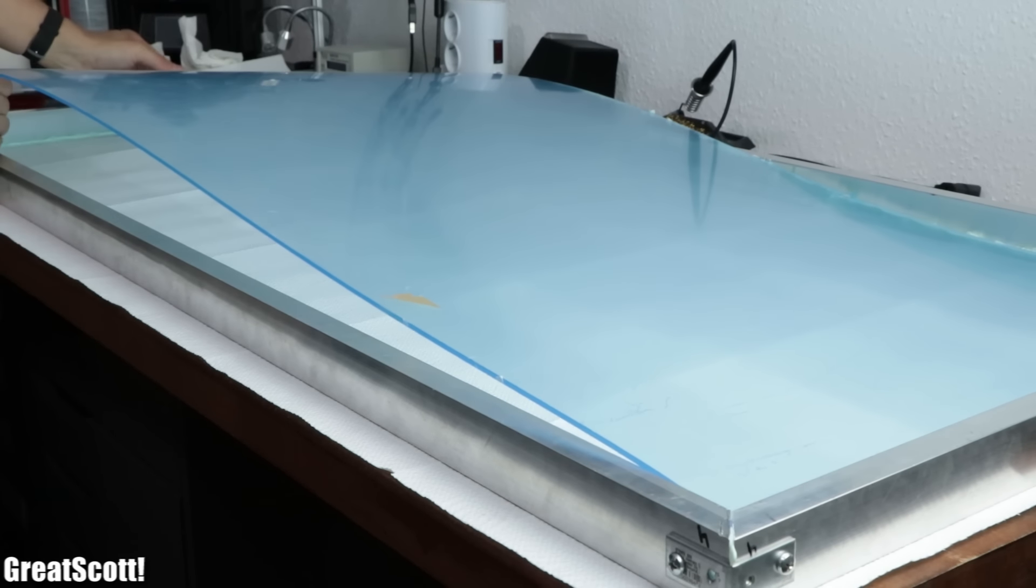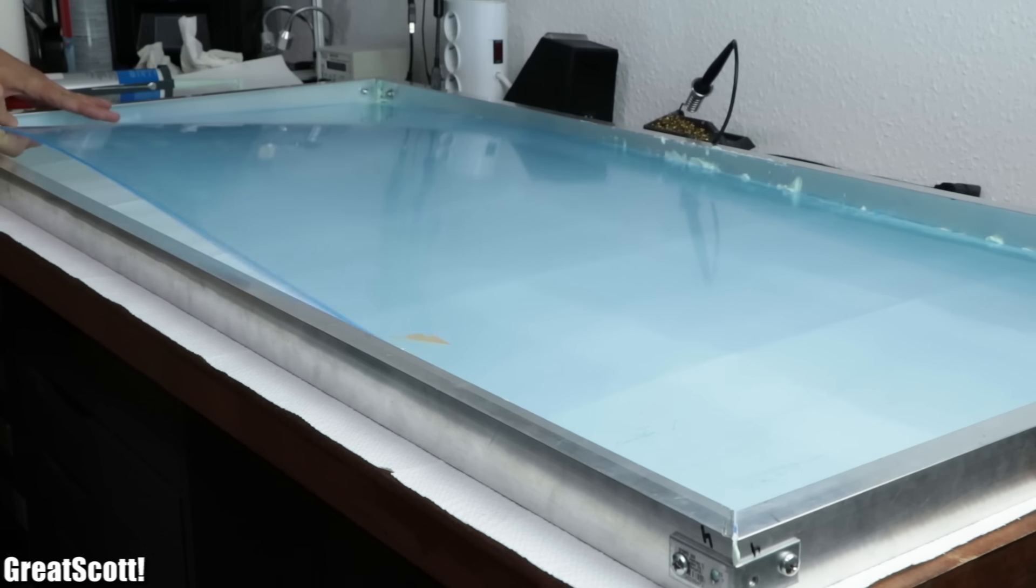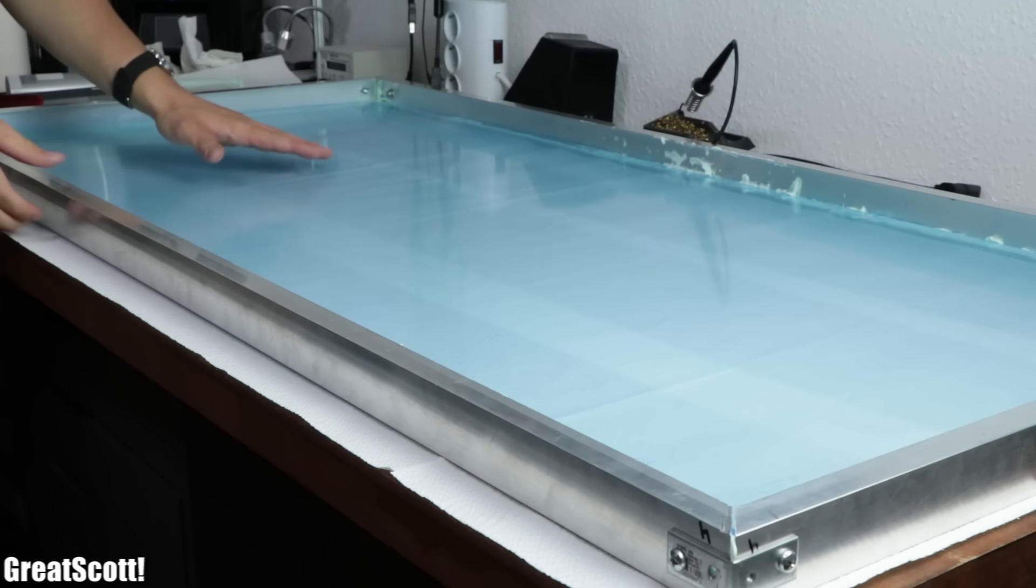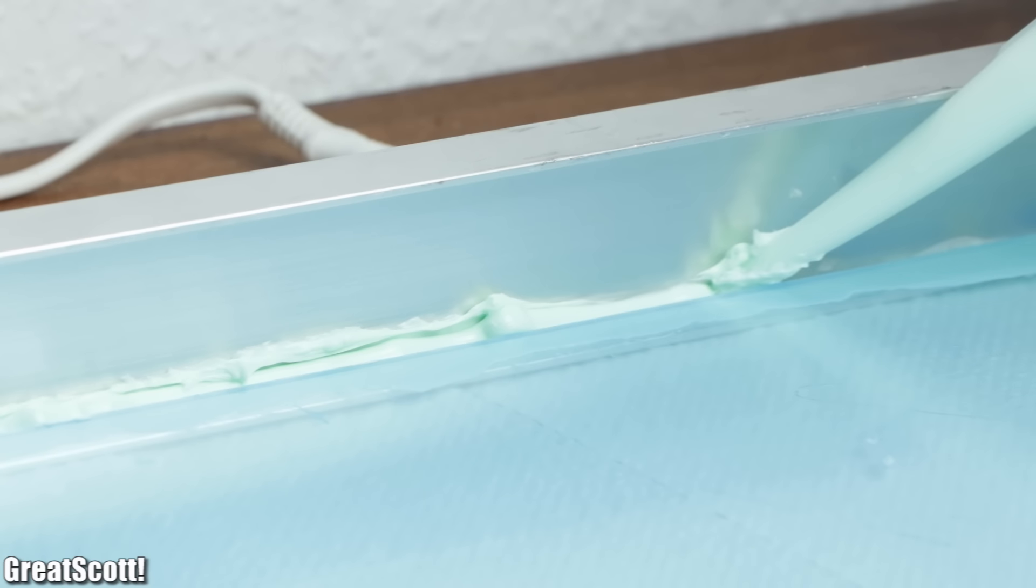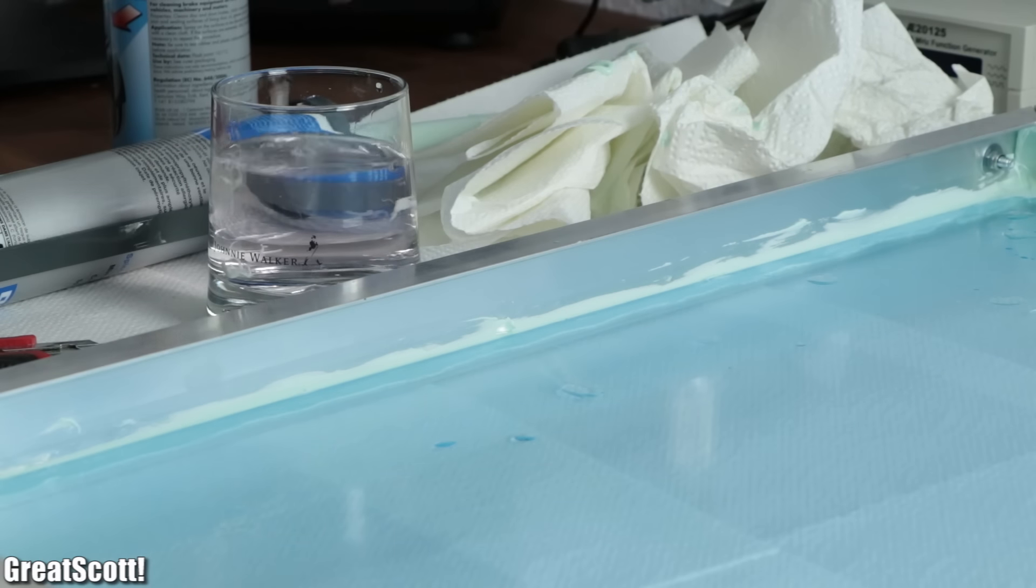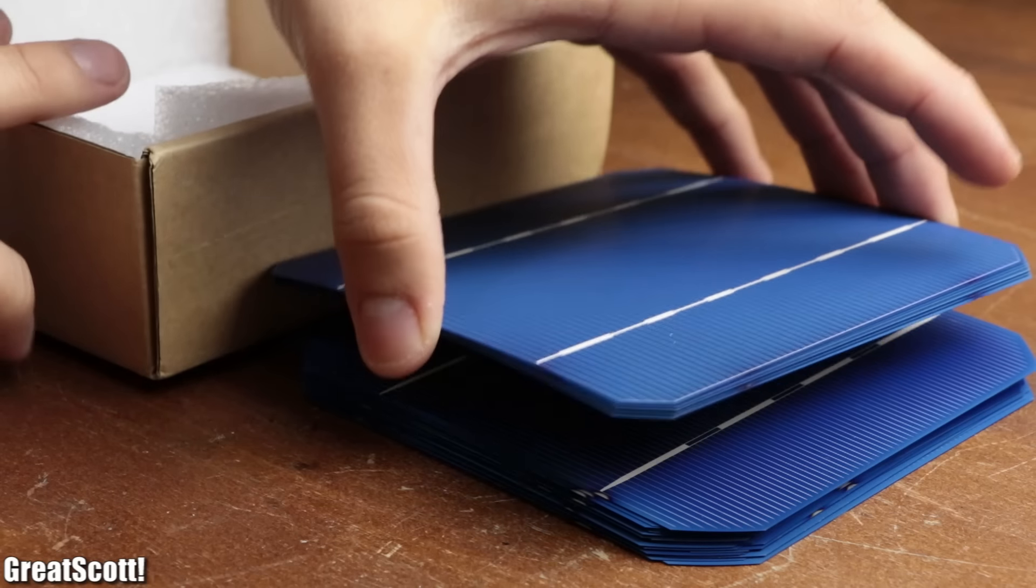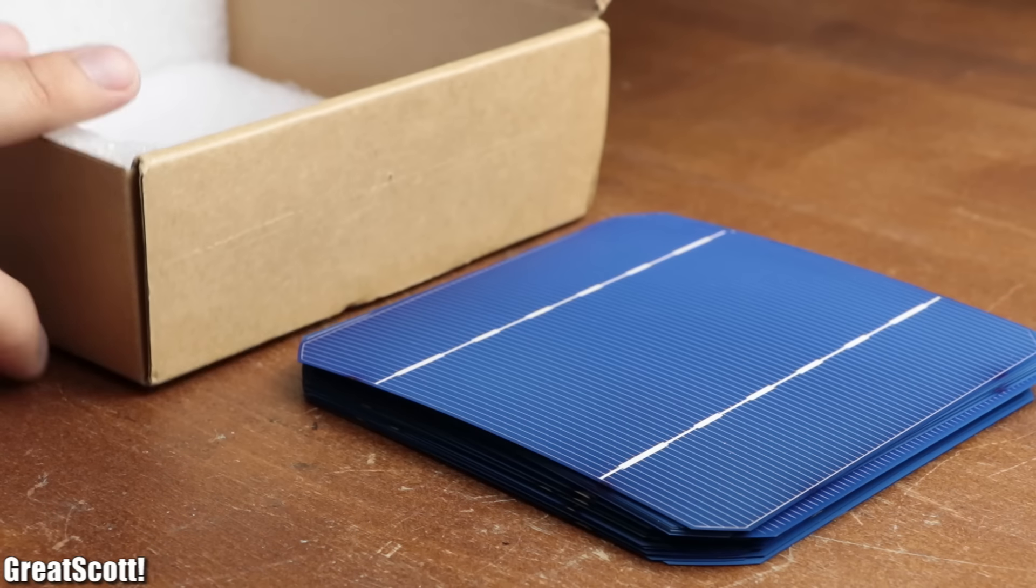But anyway, as soon as that was done I carefully pressed the plexiglass in its frame, which was a bit messy at first, but after doing some cleanup with additional adhesive, it did not look that terrible. And while the adhesive was drying, it was time to prepare the 36 solar cells.